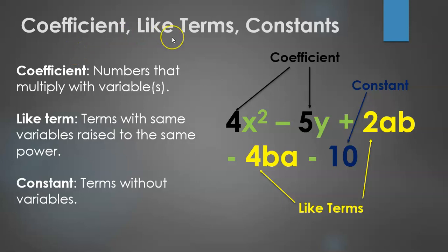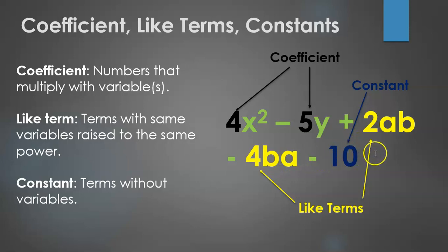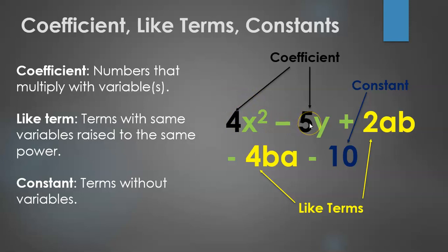Digging in further, we need to understand what a coefficient is, what are like terms, and what are constants. Let's look at this expression: 4x squared minus 5y plus 2ab minus 4ba and minus 10. So we have five terms. The coefficients would be 4, minus 5, plus 2, and minus 4.